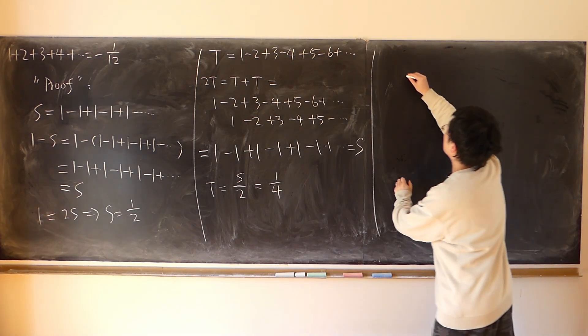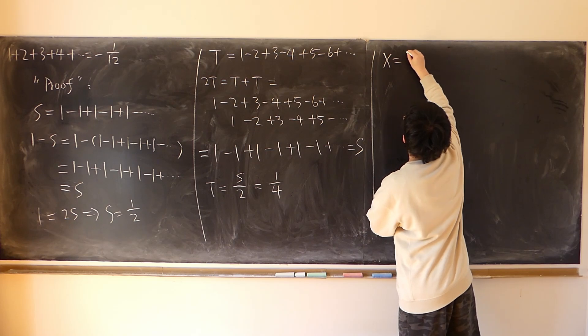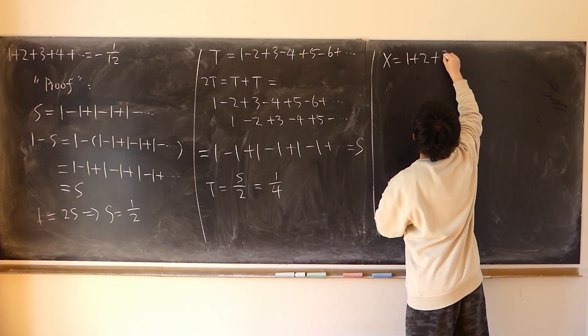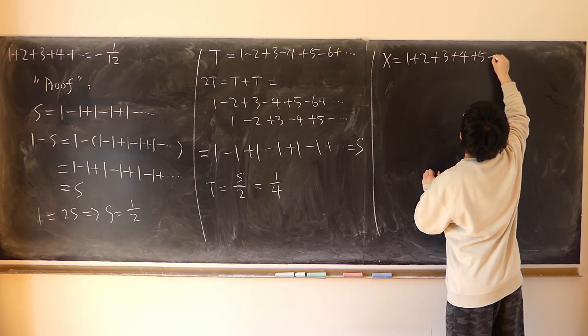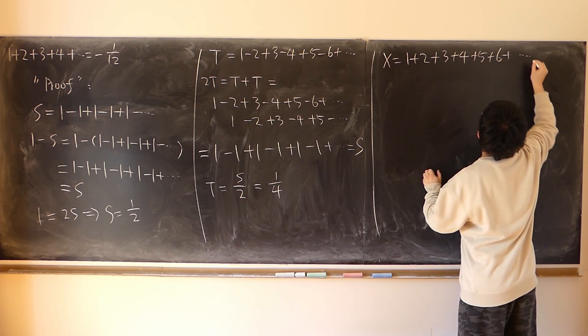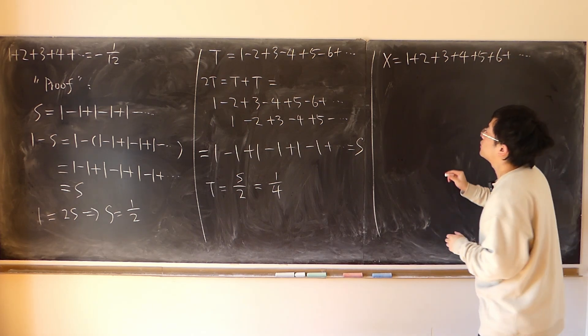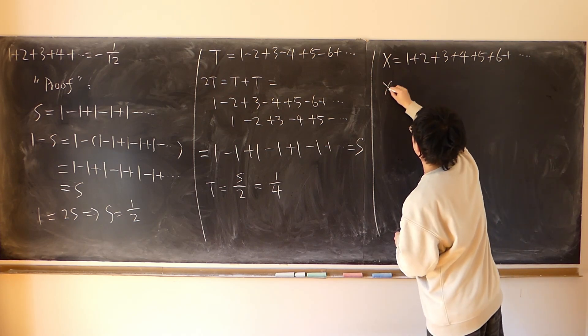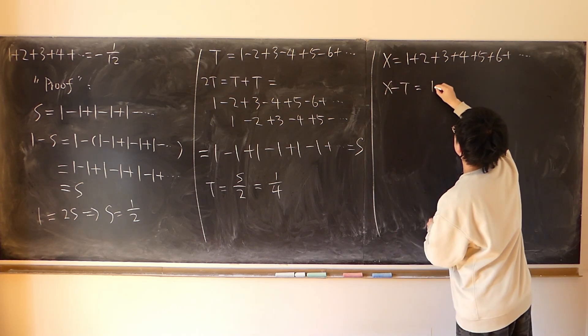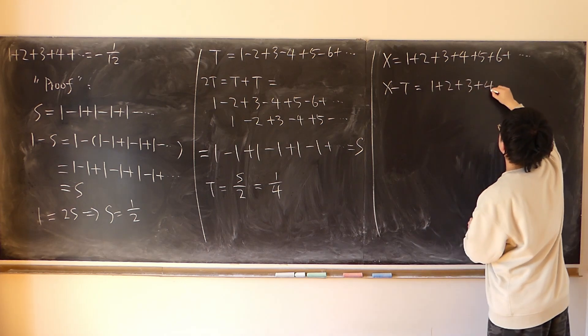And finally, we can have x denotes 1 plus 2 plus 3 plus 4 plus 5 plus 6, the sum of all the natural numbers. And x minus t is equal to 1 plus 2 plus 3 plus